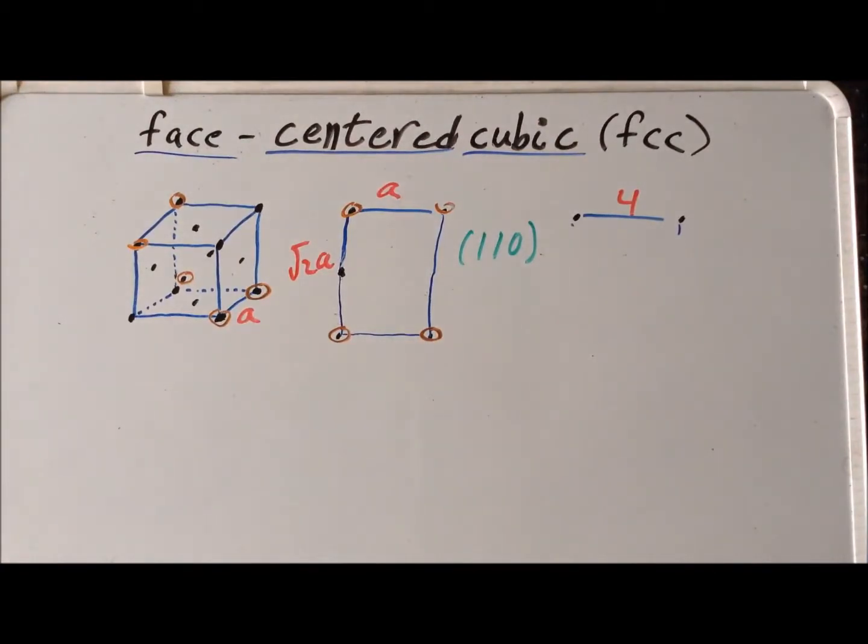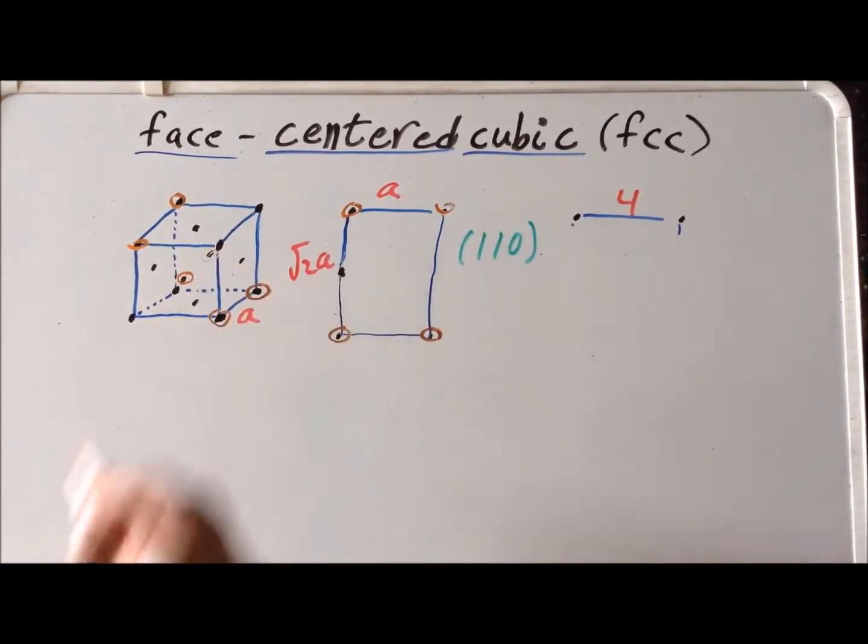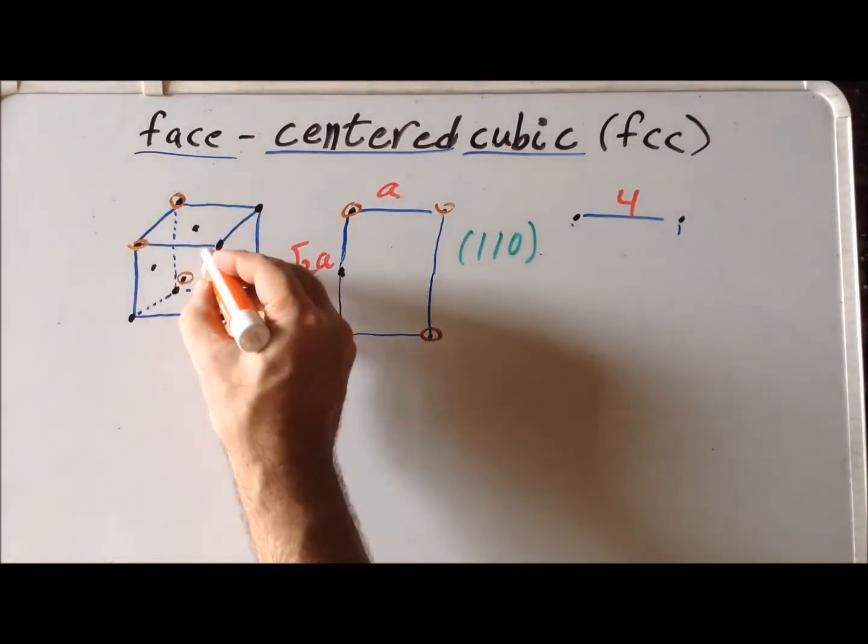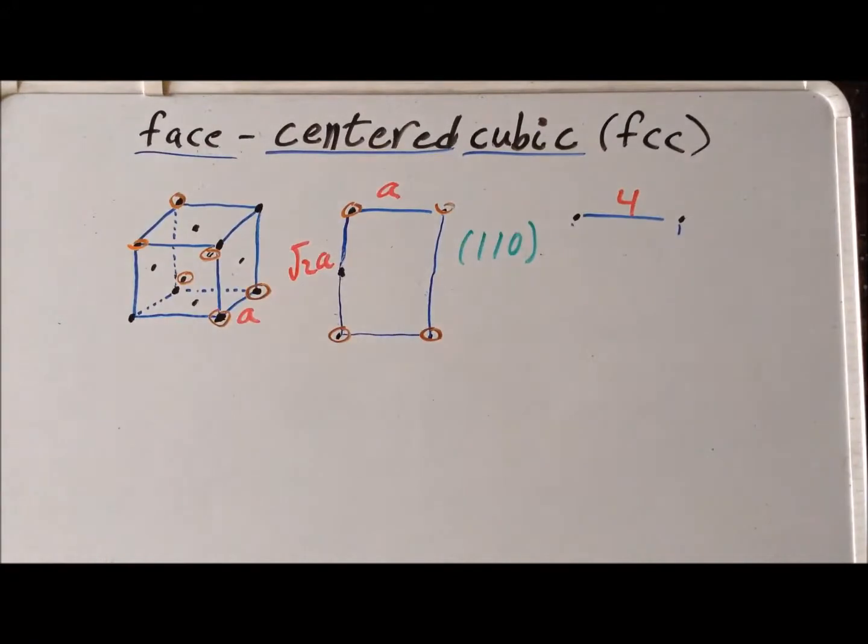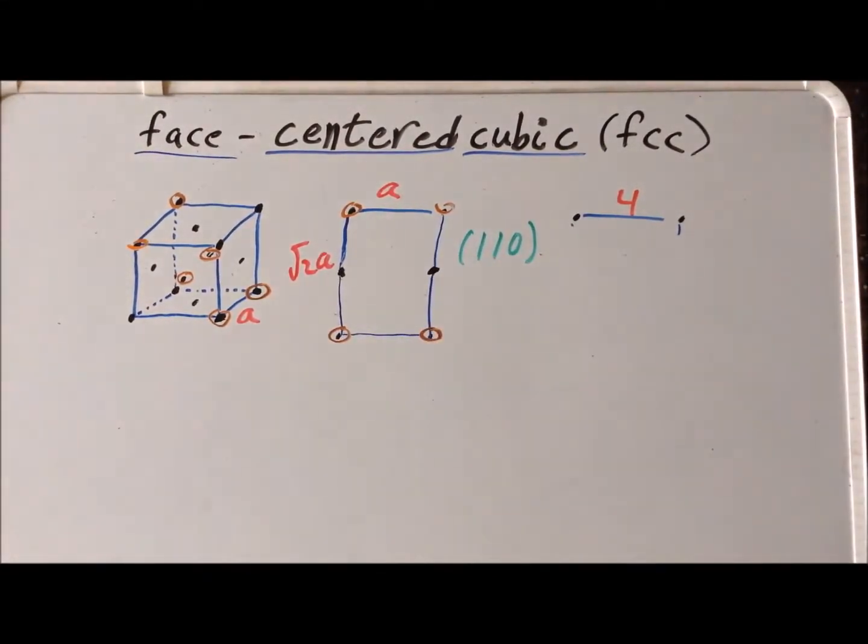And similarly, on the far face of the cube, we have an atom at the center of the face, which is right here. So we have that a little clearer to see. We have the one right there, which would be here on our vertical diagram.